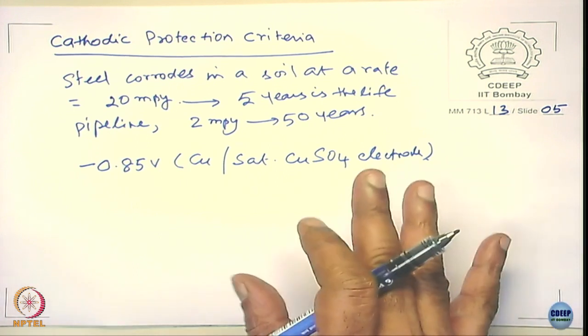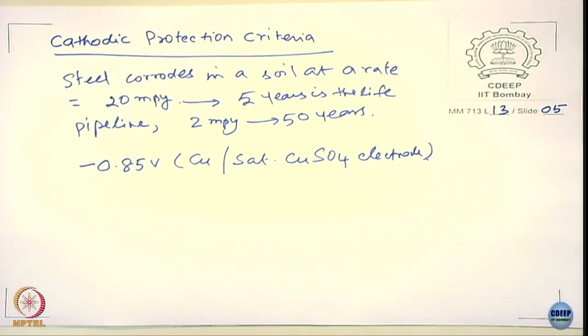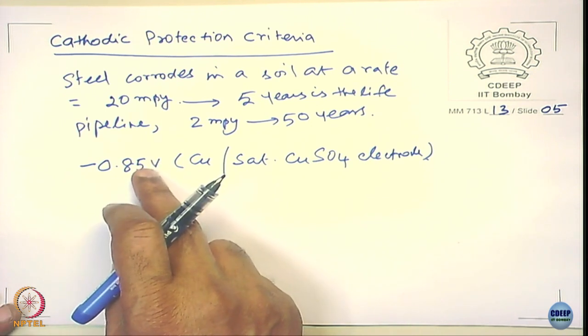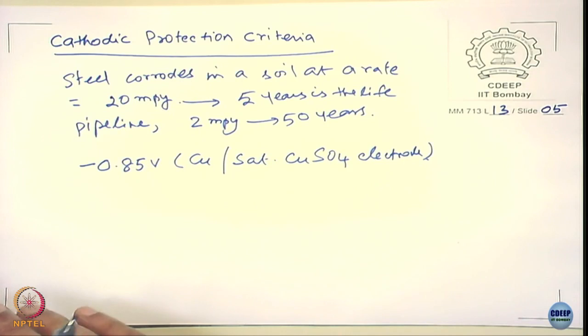For high-strength steels — for example in ship applications — they do not go as negative as −0.85 V, because in sea water making it more negative causes hydrogen evolution and cracking. So there are variations within the defined criteria based on application, but for most pipeline applications the −0.85 V vs. CSE criterion is followed.